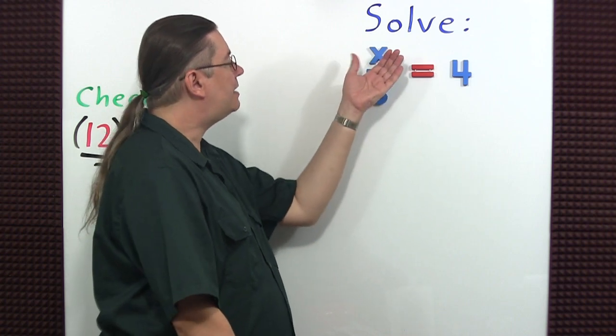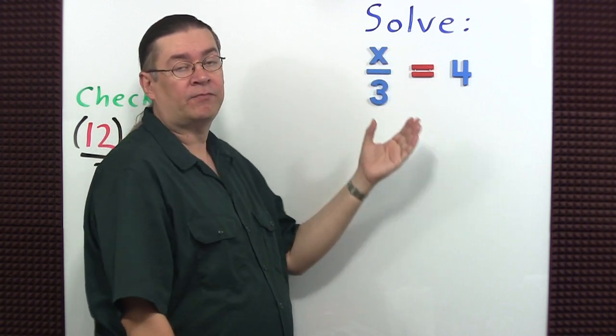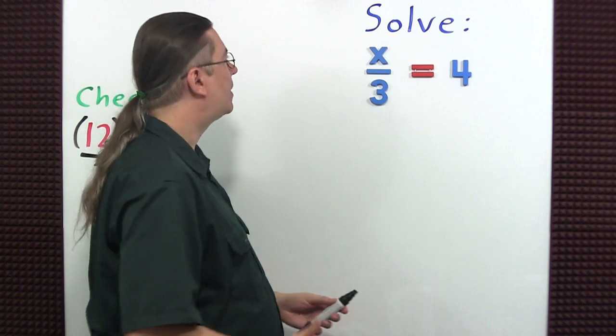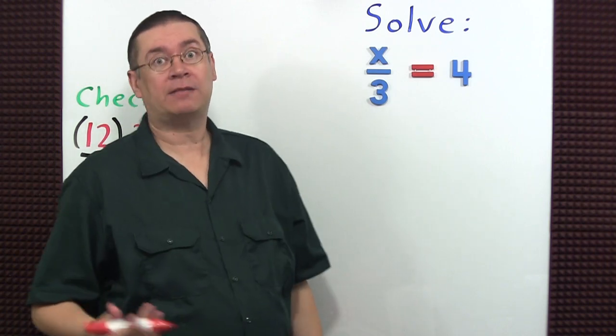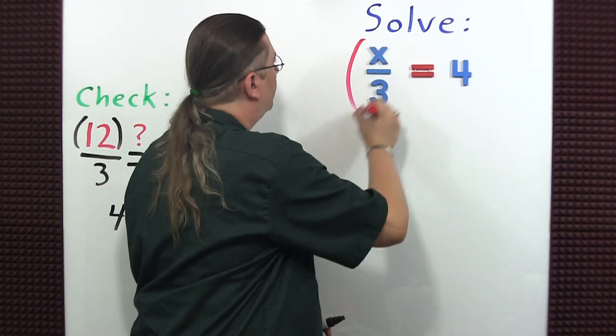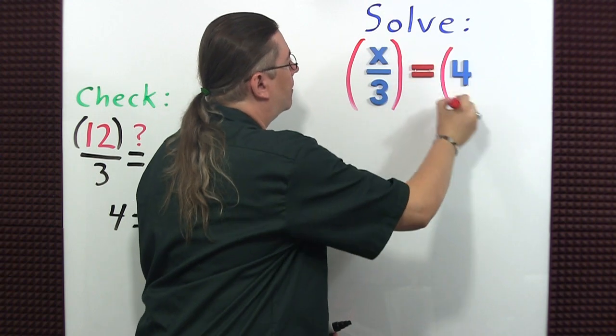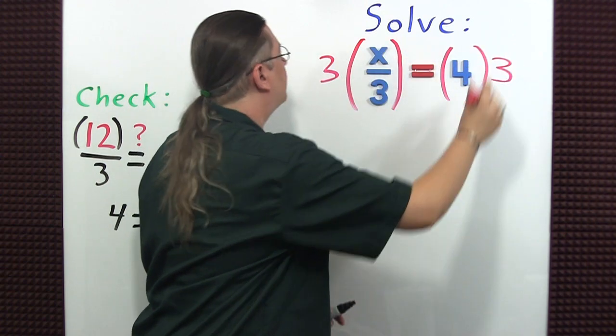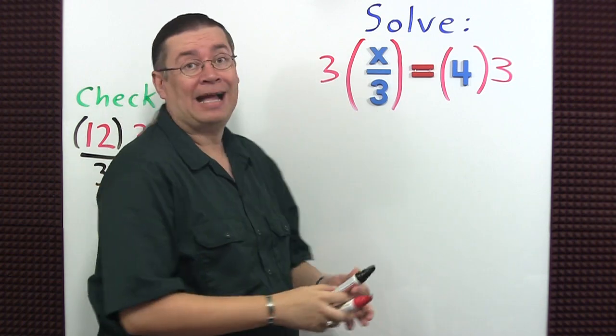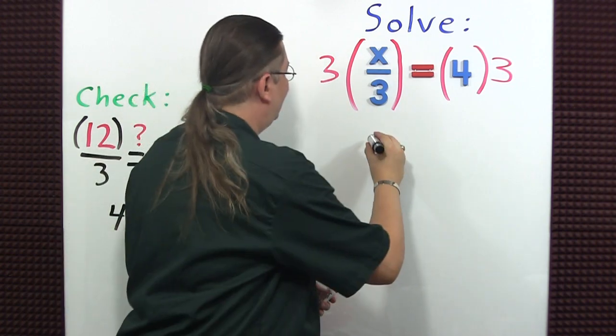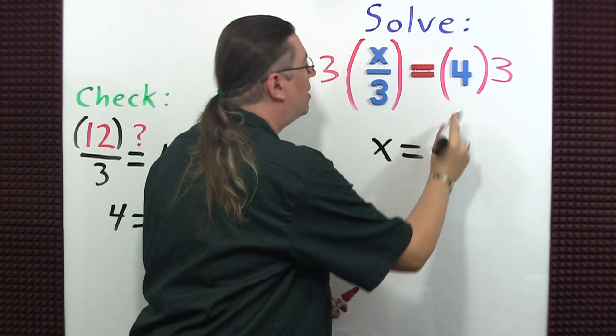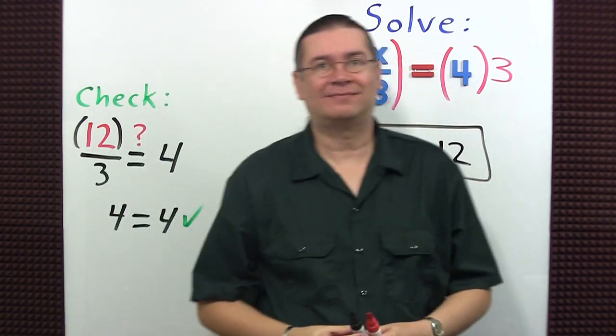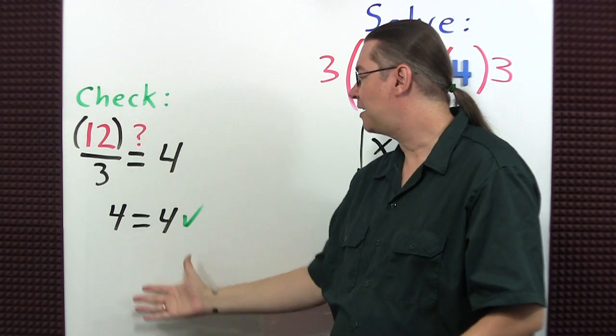Here we can see X is being divided by three. So to remove the division, we should use multiplication. I'm going to use parentheses to represent my multiplication. Multiply by three. Multiply by three. The threes cancel. I'm left with just X equals four times three, which is 12. And here's our check.